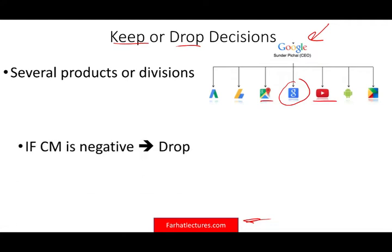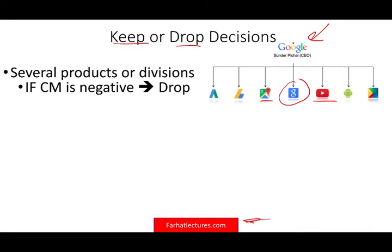Should Google drop a certain division if that division is losing money? From a numerical perspective, Google would look at the contribution margin. If the contribution margin is negative for a particular division, they would drop it because they're operating at a loss. However, YouTube for a period of time had a negative contribution margin, but Google did not drop it. So when we talk in courses or on the CPA exam, we're talking about a hypothetical situation — the numbers are there just to guide you.